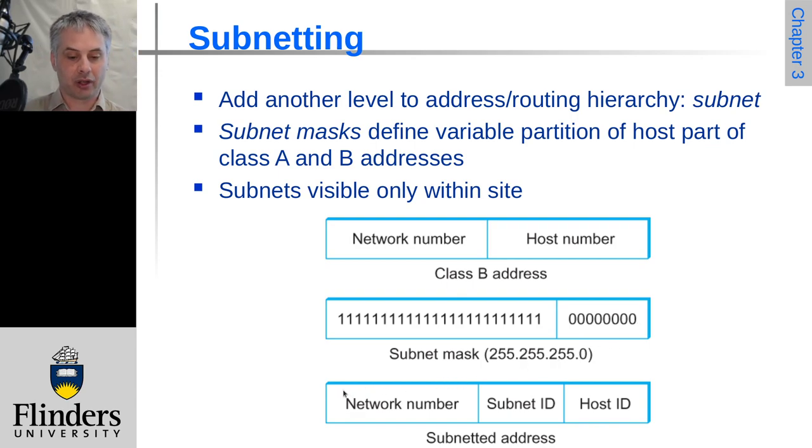So now we have a subnet address that has the network number, which is still the same length as it originally was, and then the subnet ID, which is the part within that that's still being used for network but is not part of the true network number. And then finally, the host ID for the last part.